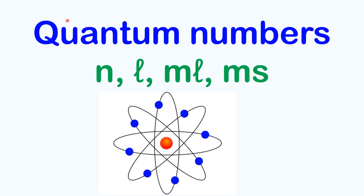In this video, we're diving into quantum numbers, a key concept in quantum mechanics. These numbers are essential for understanding how electrons behave in atoms. We'll break down what each one means and how they pinpoint an electron's position. And don't miss it — stick around for some practice problems at the end.